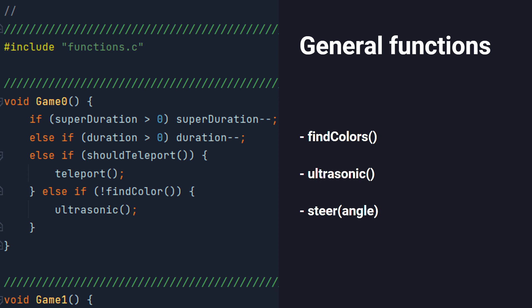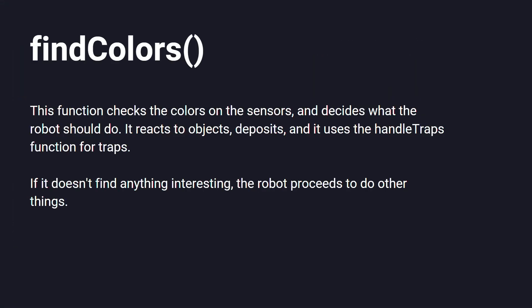The first one is FindColor. This function tells the robot how to react to different colors on the map — for example, whether it should deposit or collect objects, or avoid traps.